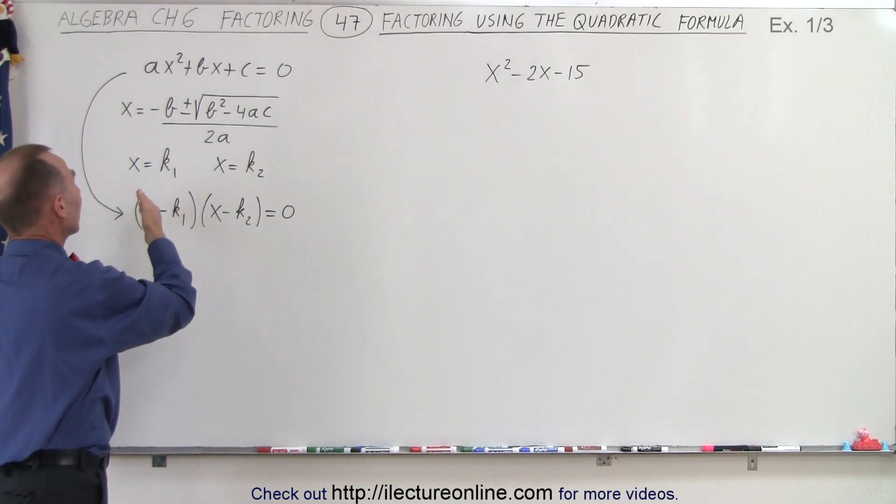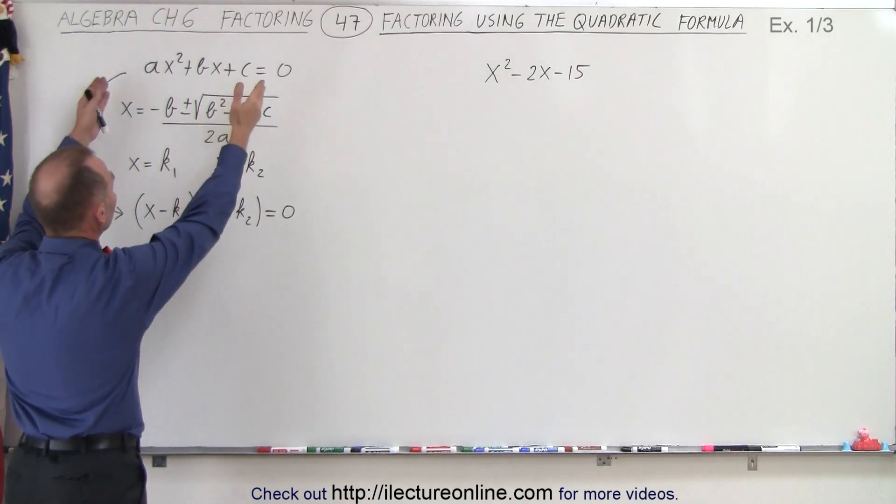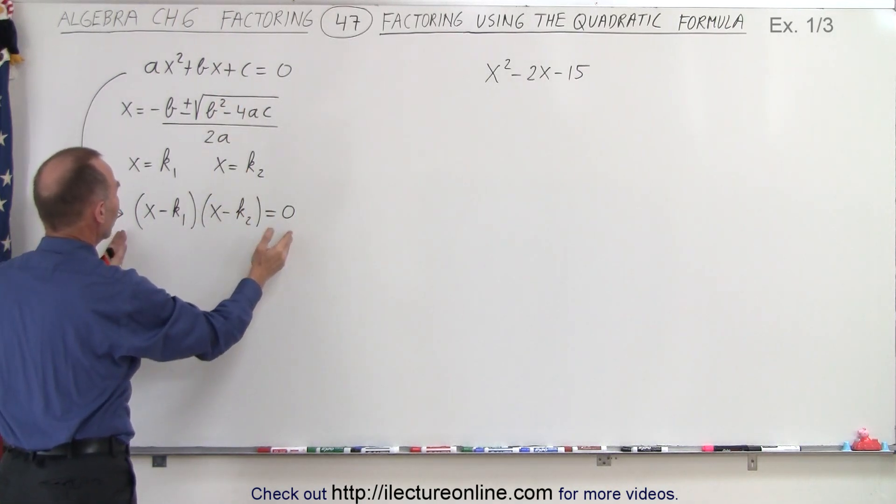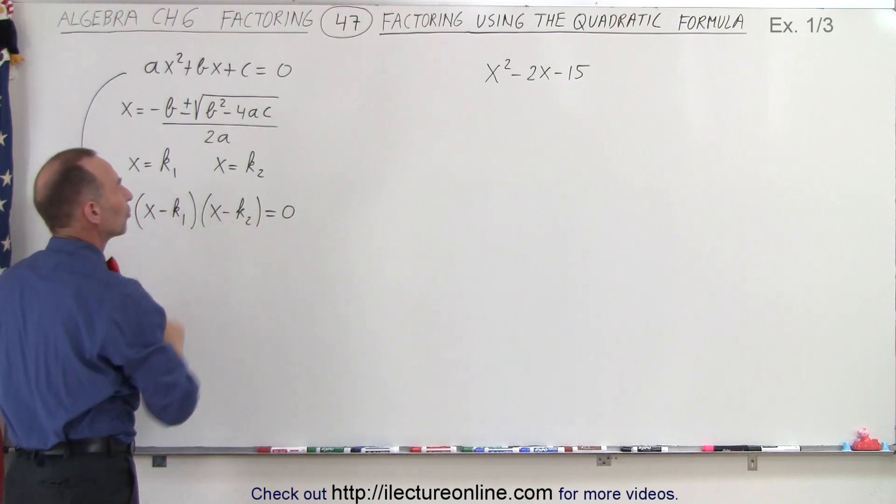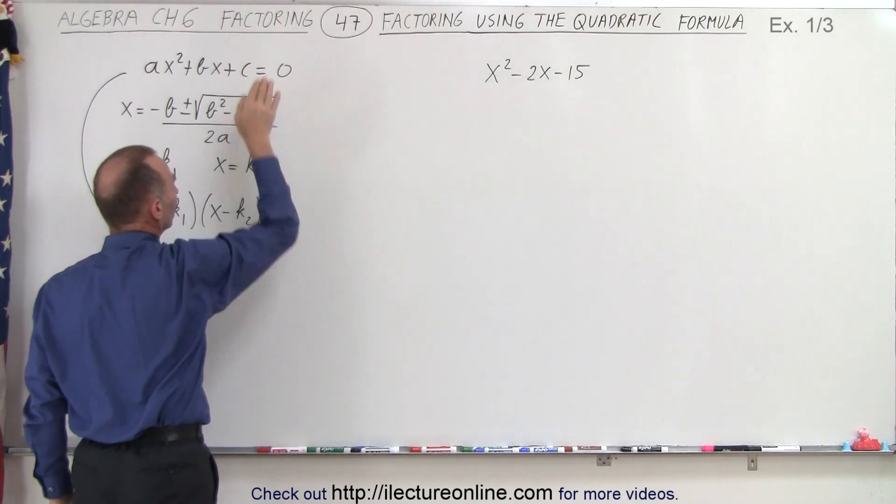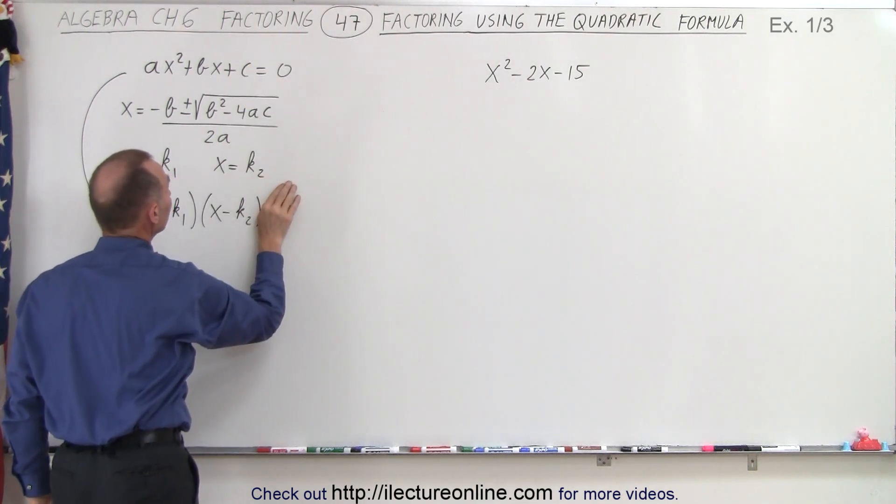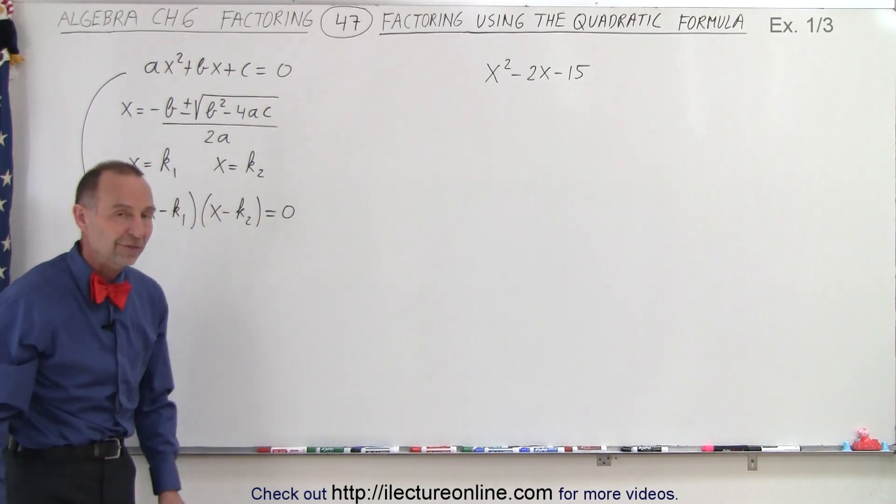And then we solve for x and we're going to get x to be equal to two constants k₁ and k₂. Then we can rewrite our quadratic equation in a factored form where (x - k₁)(x - k₂) = 0. So if we just imagine for a moment that we don't have equal to zero, that means we can take the trinomial and factor it using that very same technique.